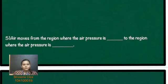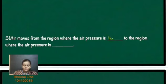The fifth question: air moves from the region where the pressure is high to the region where the air pressure is low. So it moves from a high air pressure region to a low air pressure region.